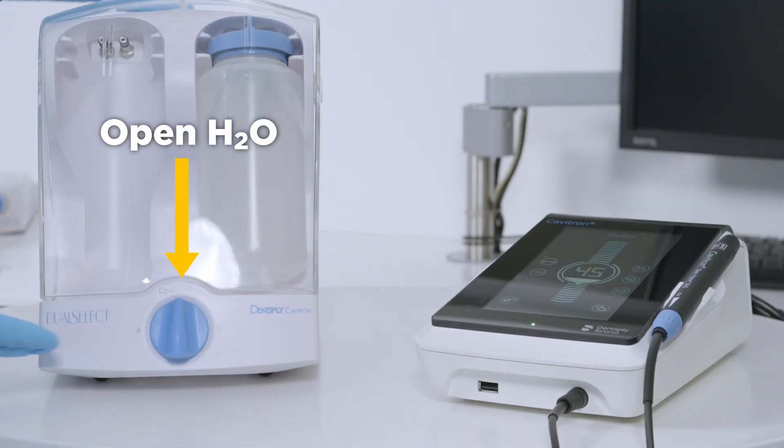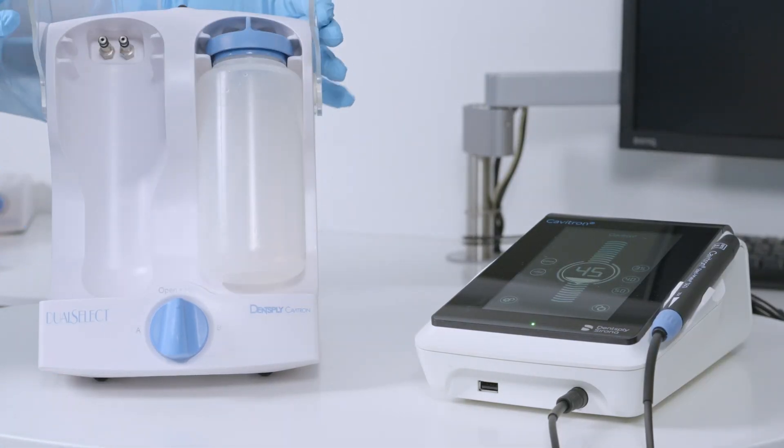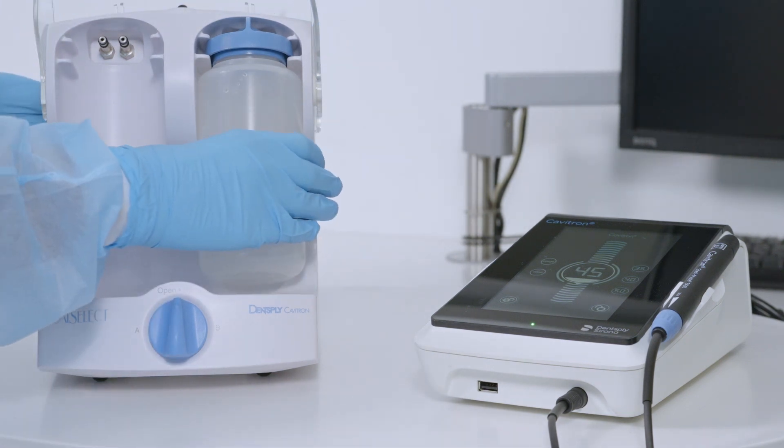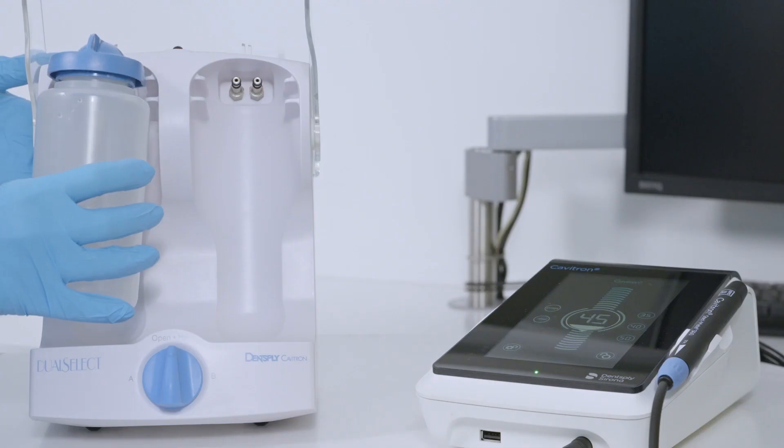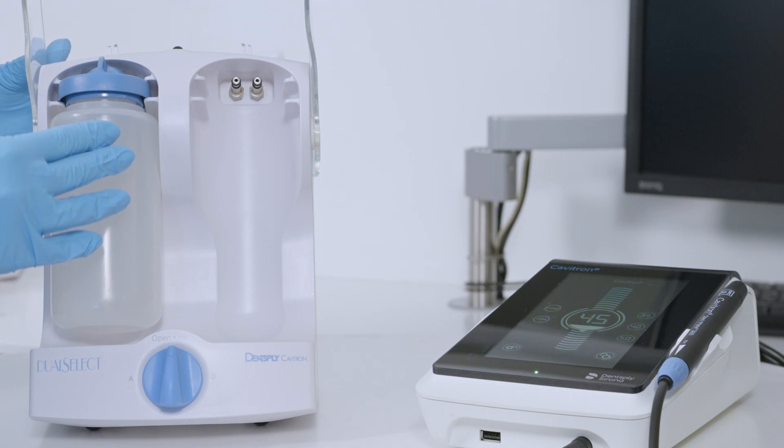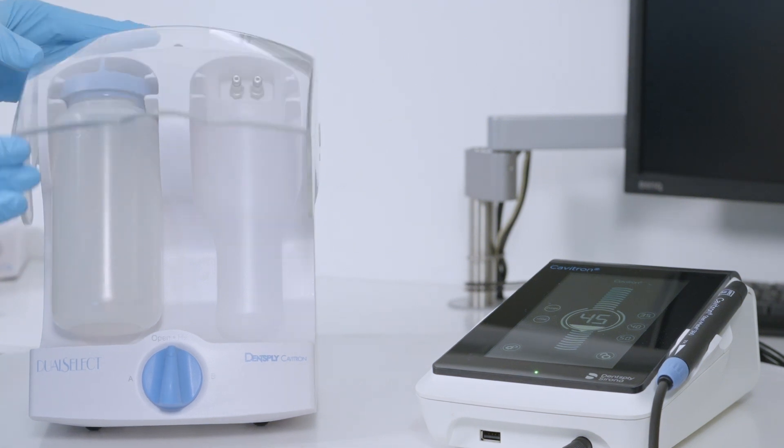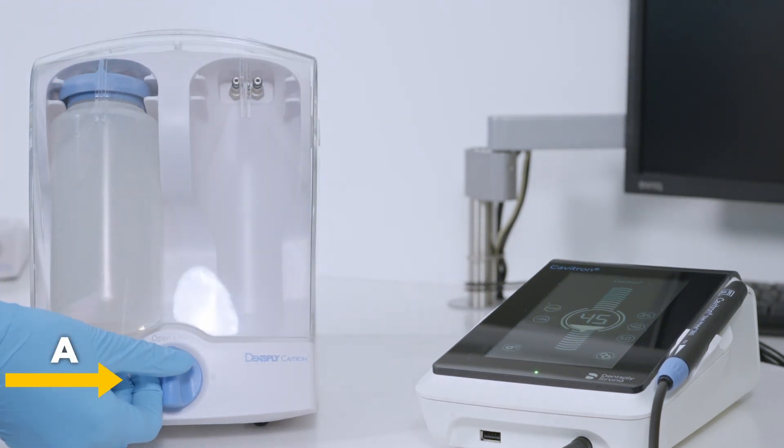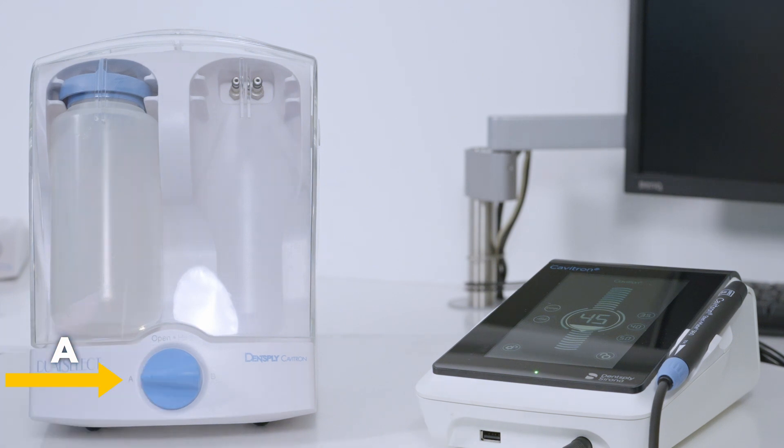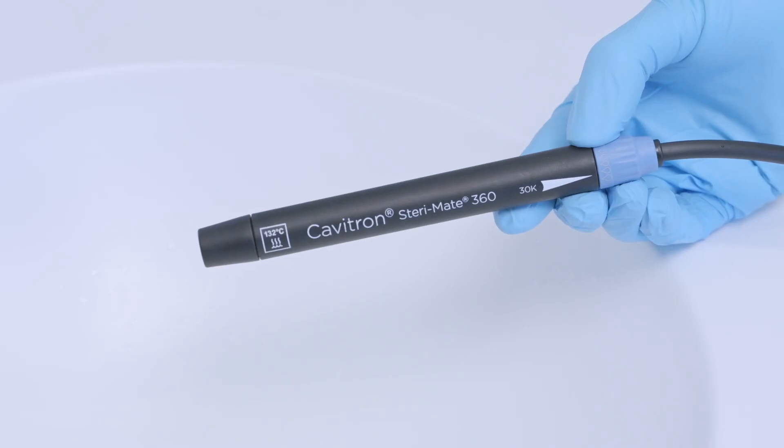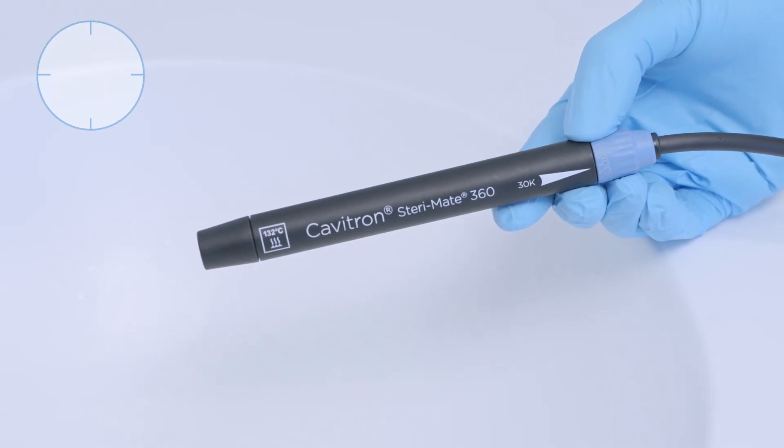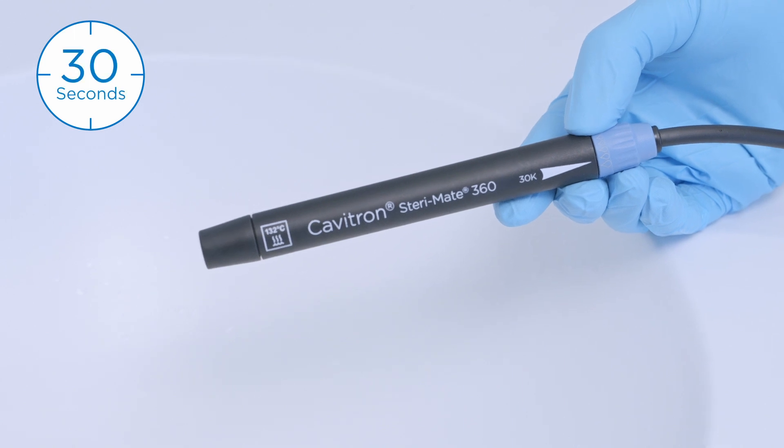Set the selector knob to open H2O. Open the shield and remove the empty bottle from position B. Place the empty bottle in position A, close the shield, and set the selector knob to position A. Operate the Cavitron system at maximum water flow for at least 30 seconds to air purge the line dry.